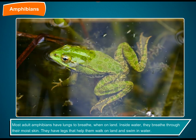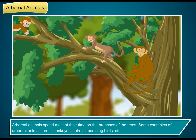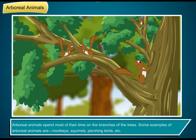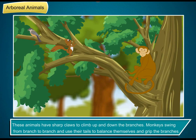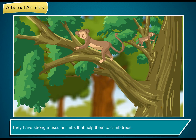Amphibians have legs that help them walk on land and swim in water. Arboreal animals spend most of their time on the branches of trees. Some examples of arboreal animals are monkeys, squirrels, and perching birds. These animals have sharp claws to climb up and down the branches.